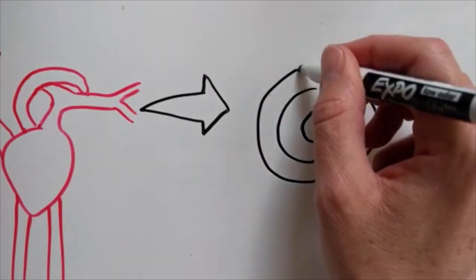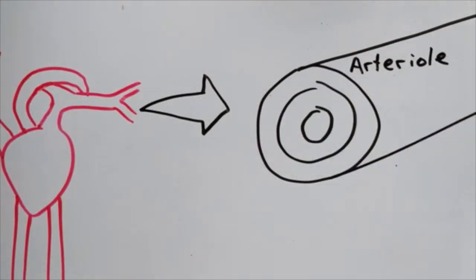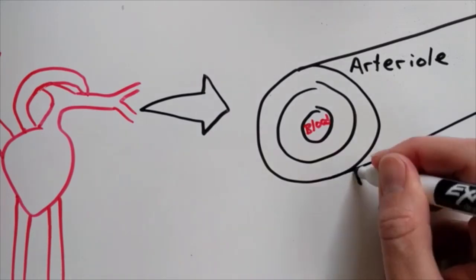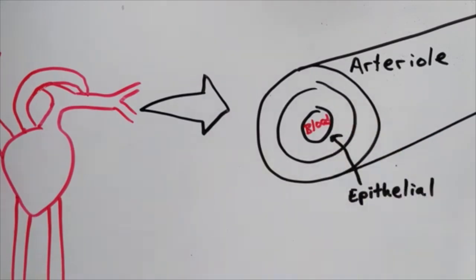Organs are made up of different tissues. For example, blood vessels, called arterioles, have a thin layer of epithelial tissue, which creates a barrier between the blood and other tissues.